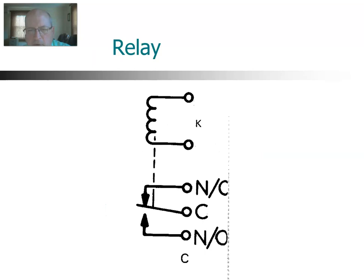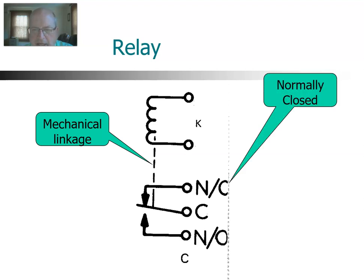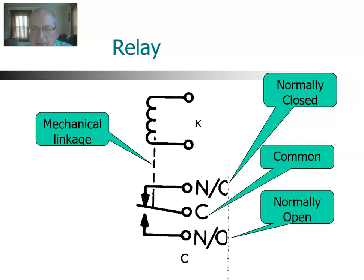Here we have a relay. The relay has two different parts: the inductor on top is called a coil, and on the bottom are the switch contacts. They are connected together with a mechanical linkage — the dotted line indicates that. The switch has designations NC for normally closed, NO for normally open, and C for common. So the relay has two parts, the coil and the switch, mechanically linked together.